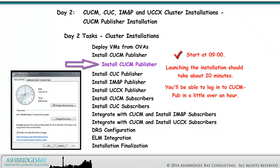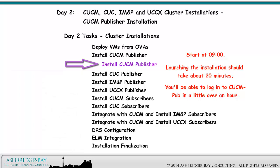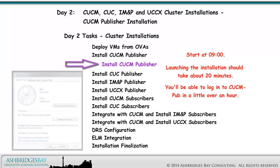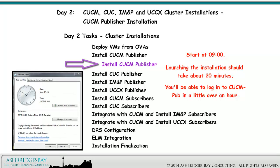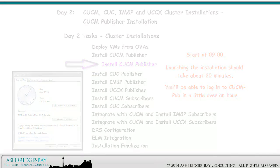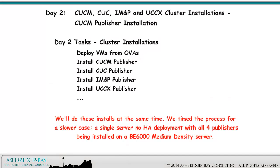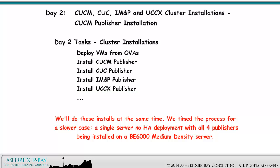Start at 9 o'clock. Launching the installation should take about 20 minutes. You'll be able to log in to CUCM Pub in a little over an hour. We'll do these installs at the same time. We timed the process for a slower case — a single-server, no-HA deployment — with all four publishers being installed on a BE6000 medium-density server.